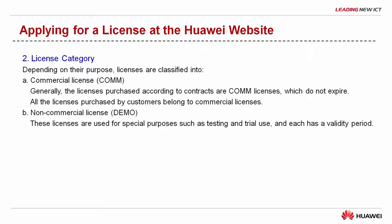Depending on their purpose, licenses are classified into commercial and non-commercial licenses. Generally, the licenses purchased according to contracts are commercial licenses, which do not expire. The licenses used for special purposes such as testing and trial use are non-commercial licenses that have a strict validity period. They are also called temporary licenses.